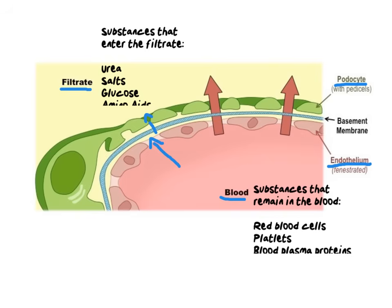To summarize: ultrafiltration is when blood moves at high pressure into the glomerulus. We select out specific substances small enough to move through the endothelium pores and the podocytes of Bowman's capsule. Those substances are either wastes or useful substances and they become part of the filtrate. All larger substances, like red blood cells and platelets, cannot enter the filtrate because they're too big — they remain in the blood and leave via the efferent arteriole.